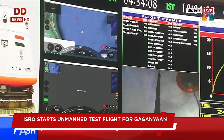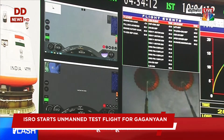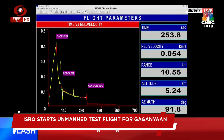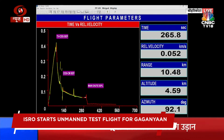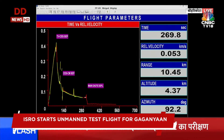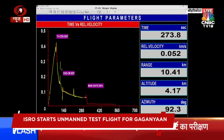Current velocity is 57 meters per second. The next flight event will be triggered by sensing the altitude of 2.5 kilometers, which is the deployment of pilot chutes, and then the main parachutes. We are at an altitude of 4.7 kilometers.